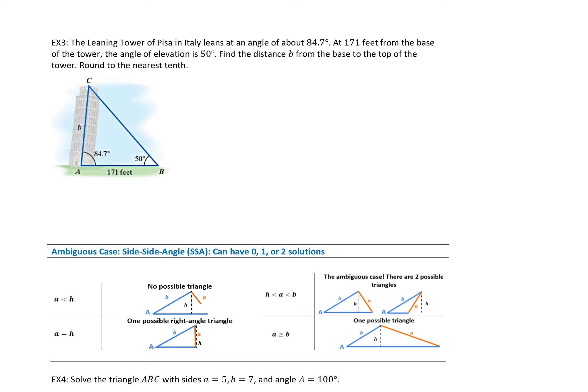Let's look at an application problem — the Leaning Tower of Pisa in Italy. It leans at an angle of about 84.7 degrees. If you're standing 171 feet away from the base of the tower along the ground, the angle of elevation to the top is 50 degrees. We're going to use this information to find the distance from the base of the tower to the top — that would be side B. We'll try to use the Law of Sines.